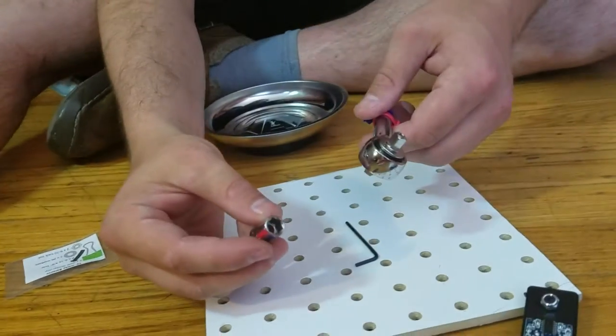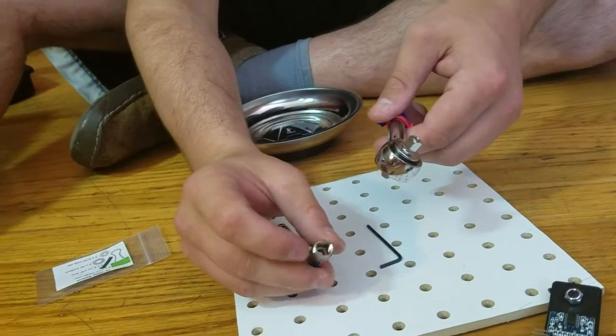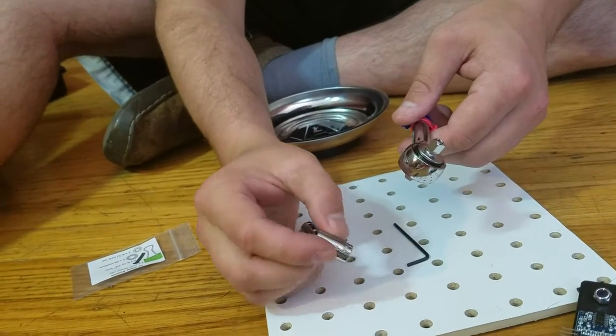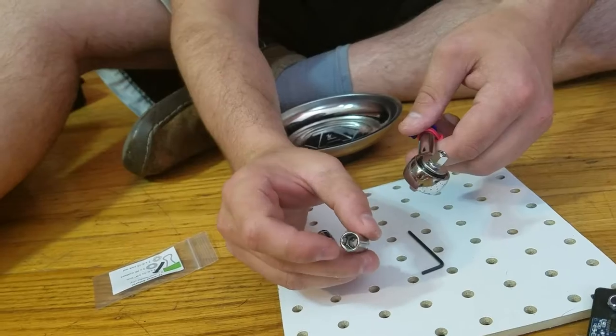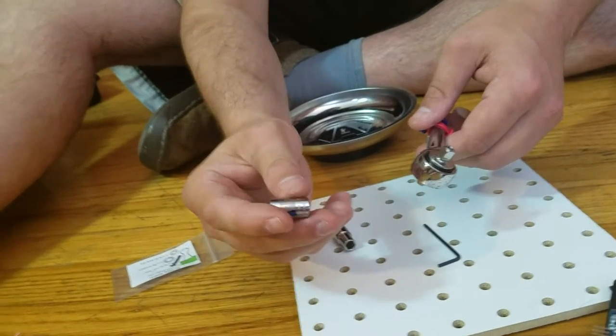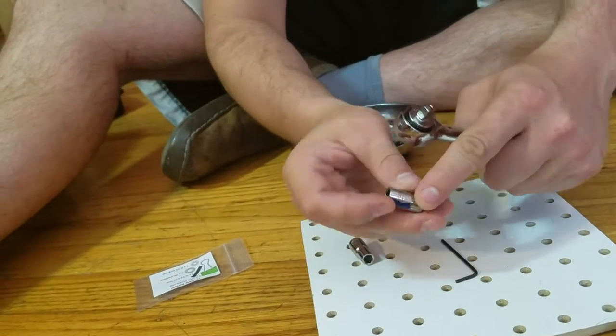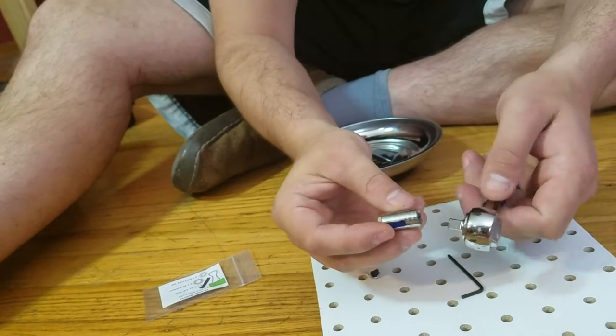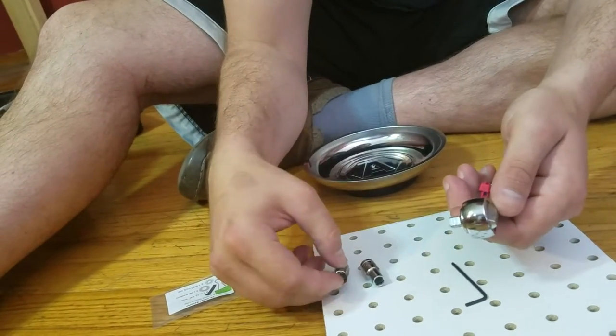We're going to find the socket wrench. One side has a square opening and the other side has a hexagon opening. And we're going to make sure that we have the one that says 5 sixteenths on it. So it's the fatter of the two.